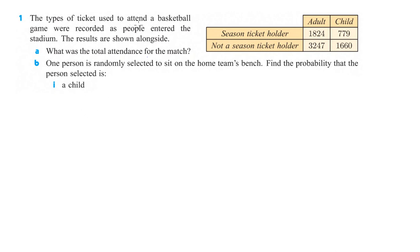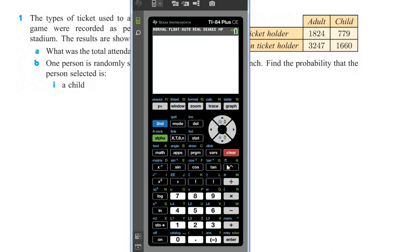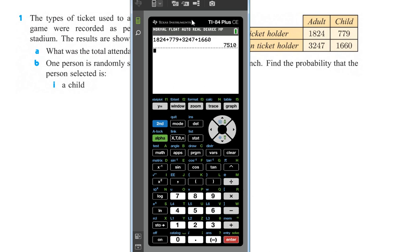First one is number one. Types of ticket used to attend a basketball game were recorded as people enter the stadium. The results are shown alongside. There are 1,824 adult season ticket holders, 779 child season ticket holders, so forth and so on. Part A says, what's the total attendance for the match? So, we have to add all these things up. We do 1,824 plus 779 plus 3,247 and 1,660, and that gives us 7,510.